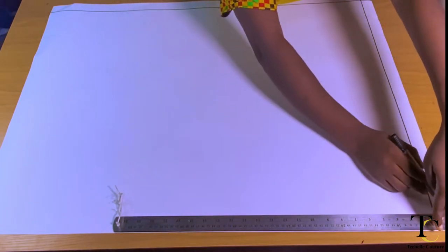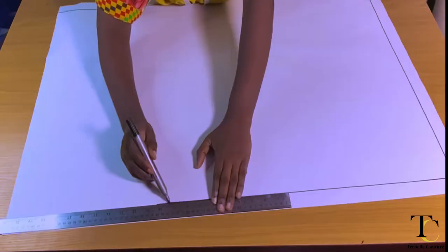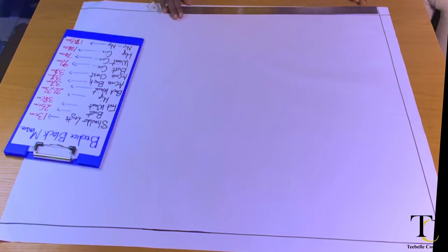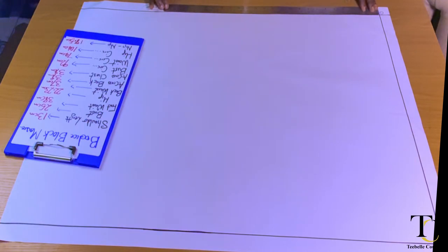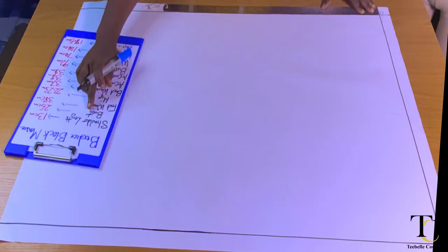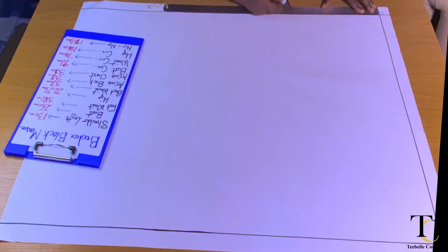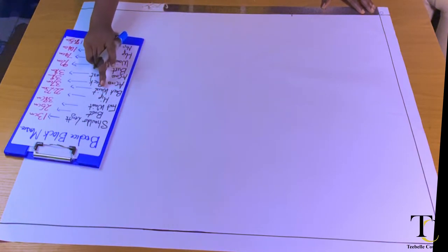The first thing I need to do is to rule some borderlines which I use as my guidelines in drafting. After ruling my borderlines, I'll go ahead to label point zero to indicate where you will start drafting from. Then I will go ahead to measure my vertical measurements along the vertical lines. The very first thing I'm measuring is my bust length which is 25 centimeters — you can convert it to inches.